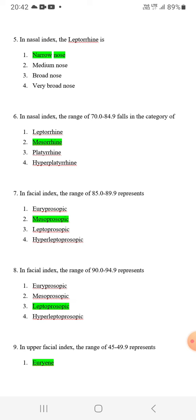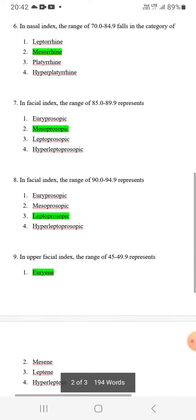In nasal index, the range of 70 to 84.9 falls in the category of mesorhine. In facial index, the range of 85 to 89.9 represents mesoprosopic. In facial index, the range of 90 to 94.9 represents leptoprosopic.